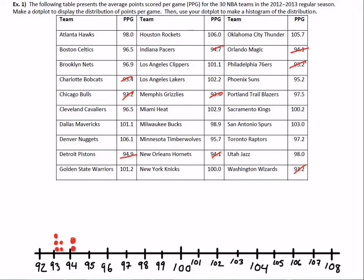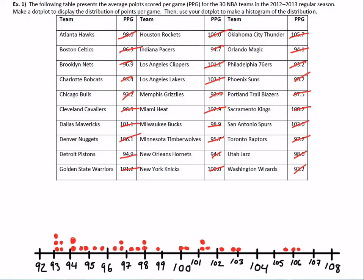Continuing down the list: some 94.7 and 94.9 values, a couple in the 95s, the 96s, a couple in the 97s, 98.0 and some change, 100, 102, 103.0, and then 106 and 106.1. Even though we had some decimals, we could squeeze them all in. We're just using this dot plot to start to be able to create a histogram.